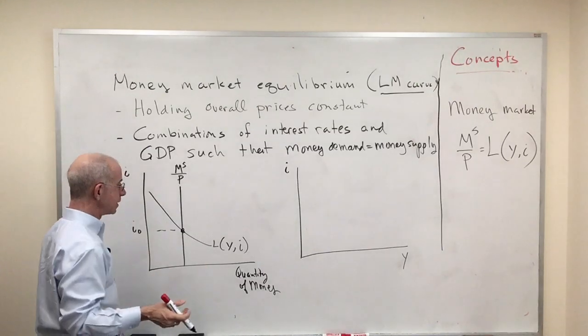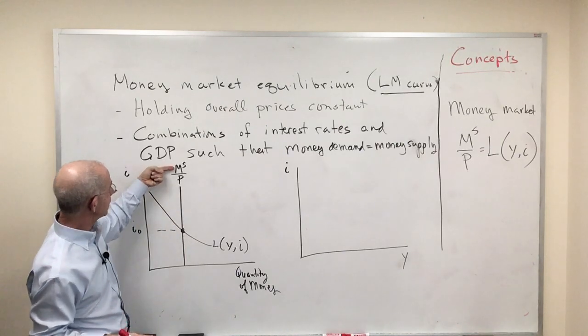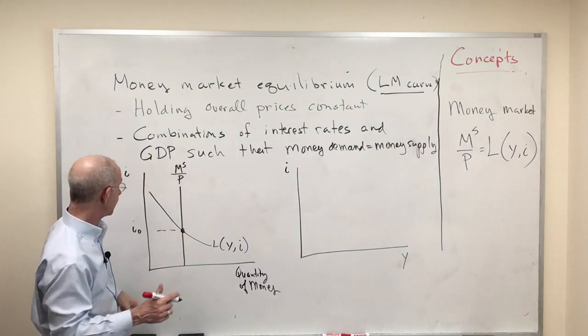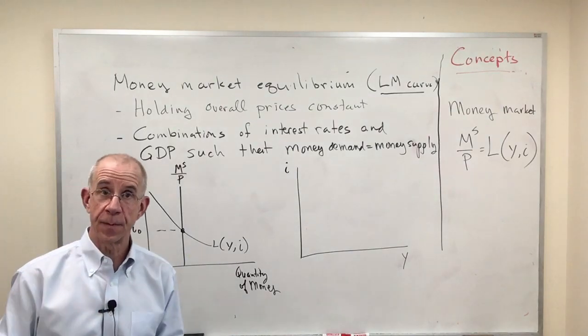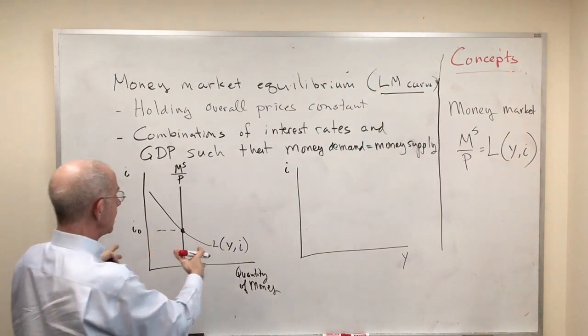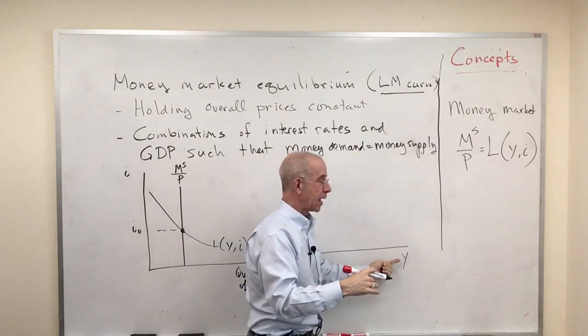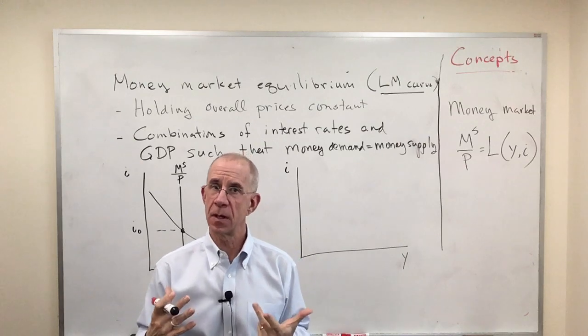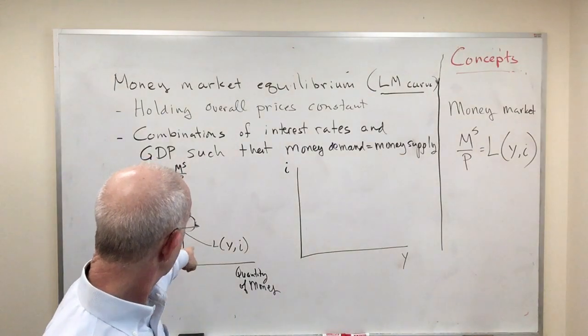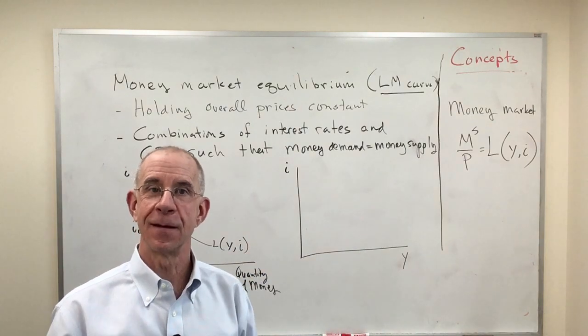And as discussed in other videos, we have this real money supply affected by monetary policy and the price level, and an interest rate such that the demand for money equals the supply for money. So we're familiar with this thing on the left. What we're going to do is translate this into a different graph with interest rates and output on the two axes. We're not doing anything new, we're just graphing it in a different way.